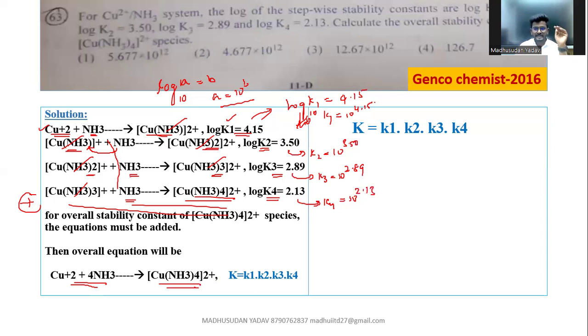So now when equations are added, equilibrium constants are multiplied. So this is the overall stability constant or overall formation constant. Now substitute all the K values in this equation.